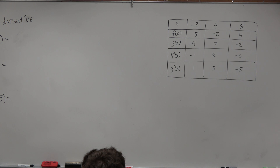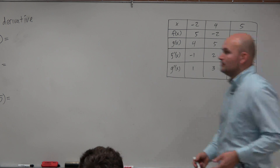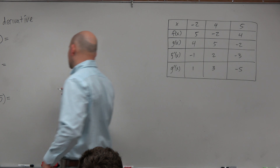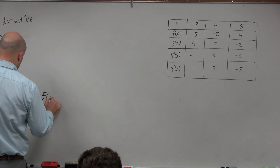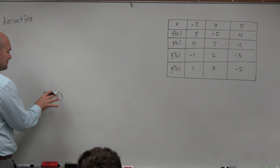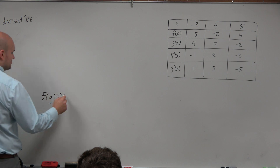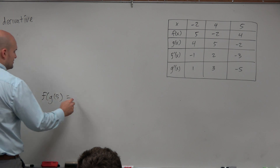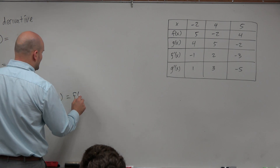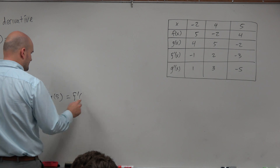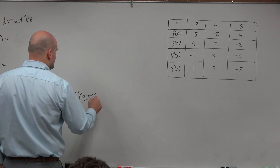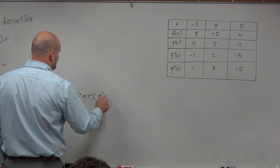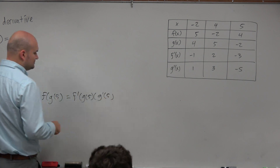If we're just looking at a table and we're trying to find the derivative of the composition of functions, here we have f of g of x, which is the same as f of g of 5. The main important thing we want to do is apply the chain rule. So therefore, we're going to do f prime of g of 5 times g prime of 5.